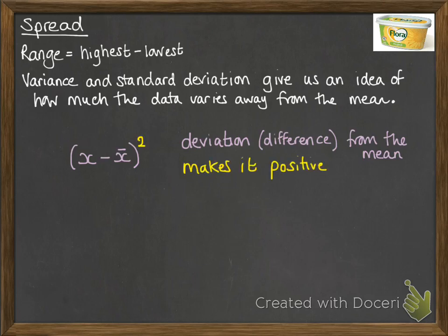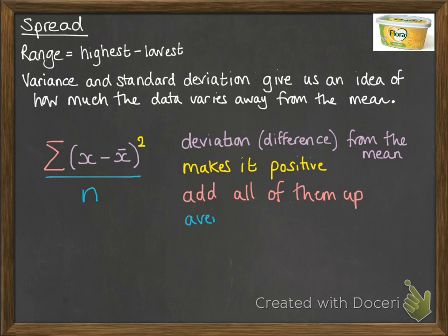Then we square that to make sure that all of those values are positive, because if you're then trying to put these together, the positives and the negatives would cancel each other out and not give us a true idea of what the spread is. Then we're going to add up all of those differences and divide by the average, or get an average of those, by dividing by how many values we did this for.